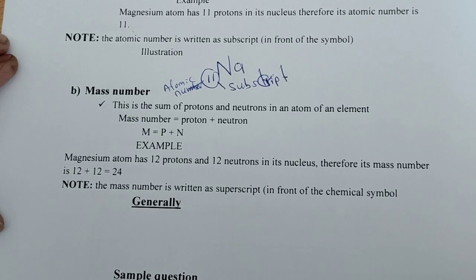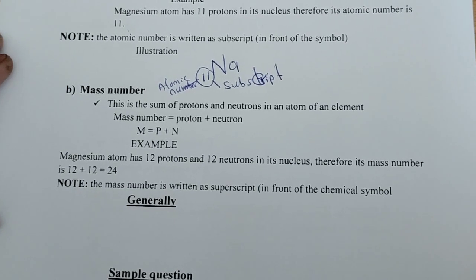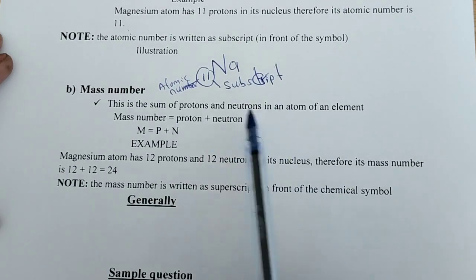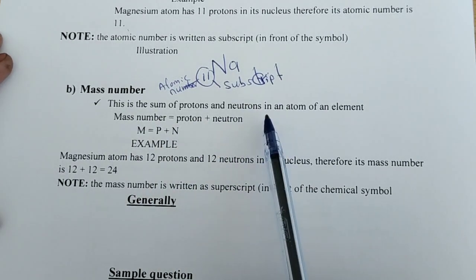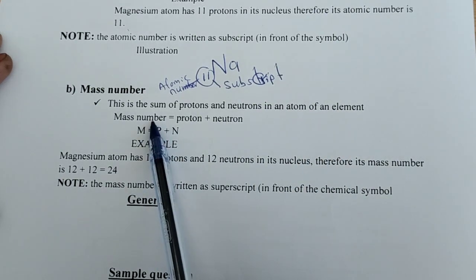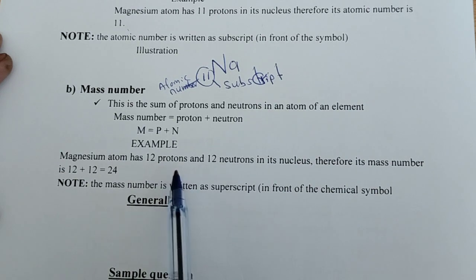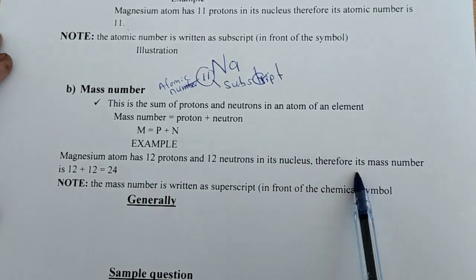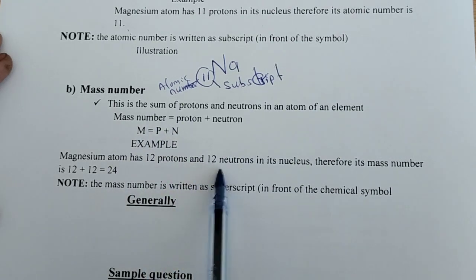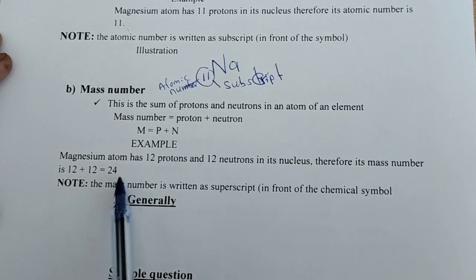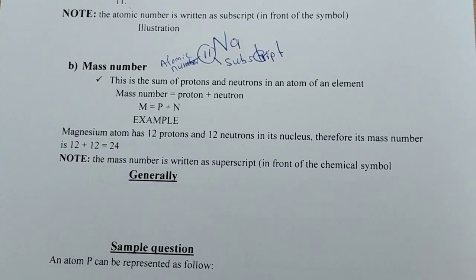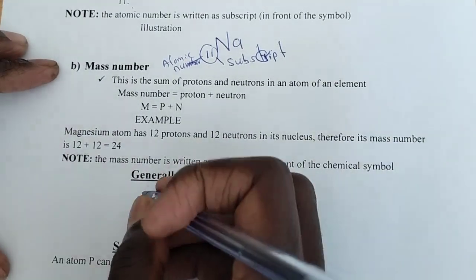The mass number is the sum of protons and neutrons. It is the total of protons and neutrons in an atom of an element, so: mass number M = protons + neutrons, or M = P + N. For example, magnesium has 12 protons and 12 neutrons, so its mass number is 24. The mass number is written as a superscript — the upper part in front of the chemical symbol.